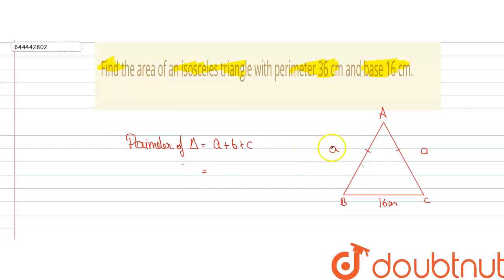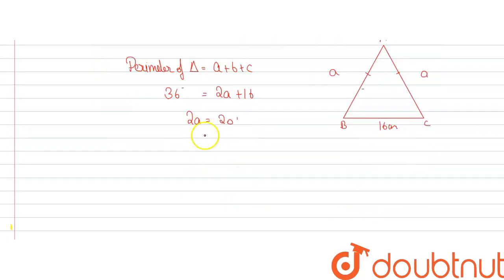The perimeter is given to us which is 36cm. So we get 2A equals 20, and therefore A equals 10.